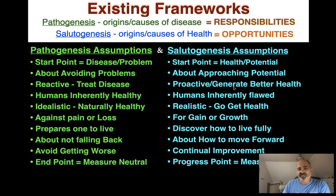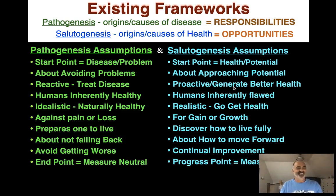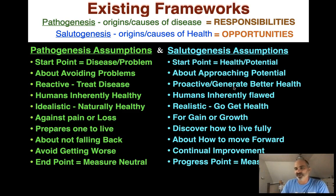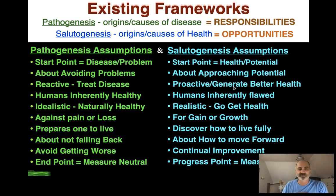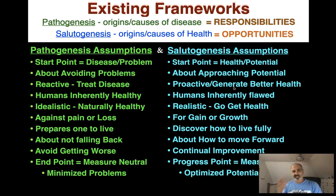In pathogenesis, there's an endpoint: the endpoint is neutral — nothing bad happens, which is good, of course. But for salutogenesis, there isn't really an endpoint; it's just a progress point. We're moving towards who we want to be and how we want to contribute to a better world. So we measure gain and the benefits we've brought to society or to ourselves. Pathogenesis is about minimizing problems, while salutogenesis is about optimizing potential — and then making those potentials real.